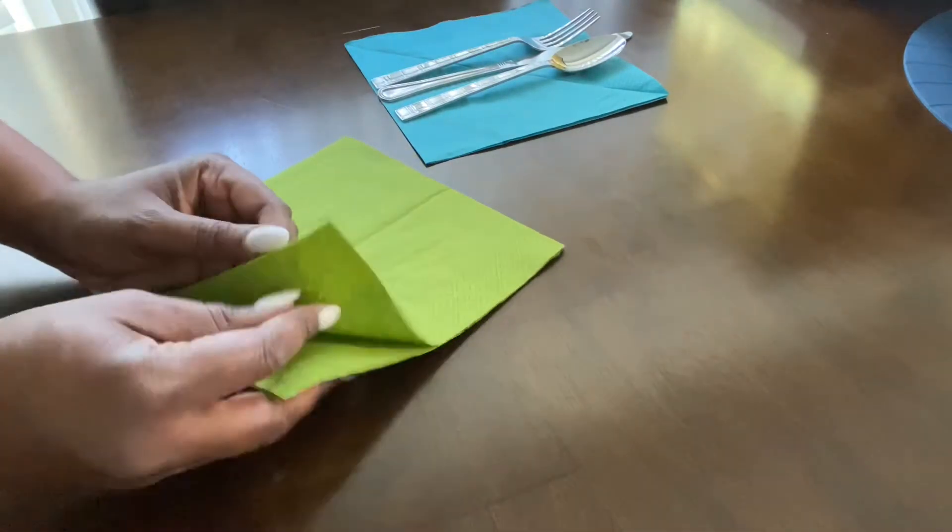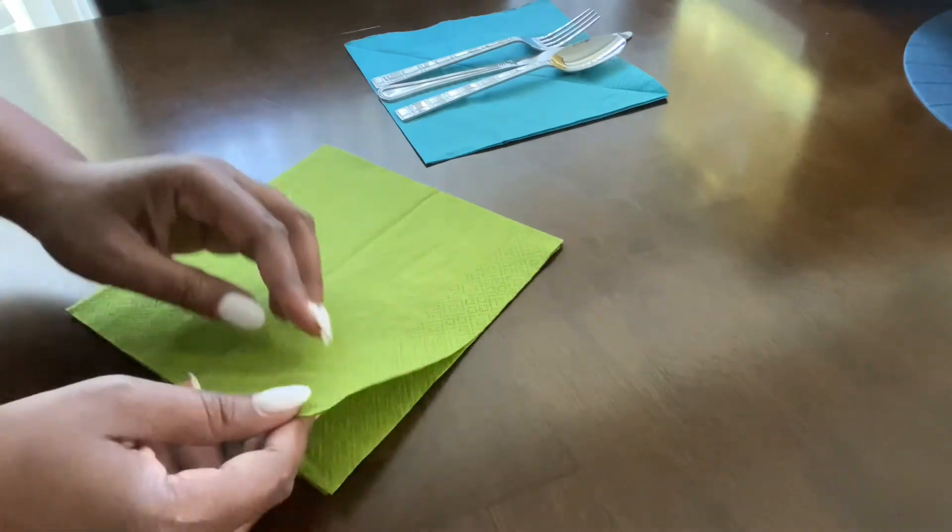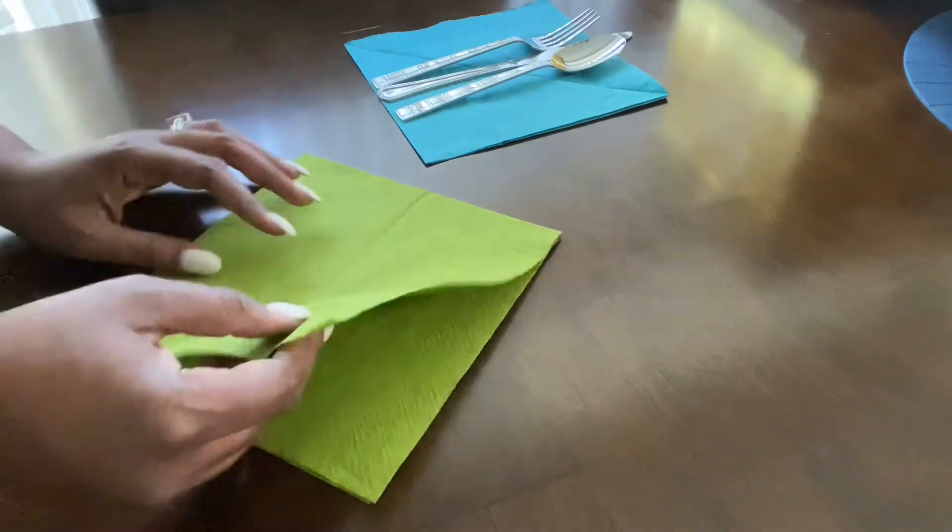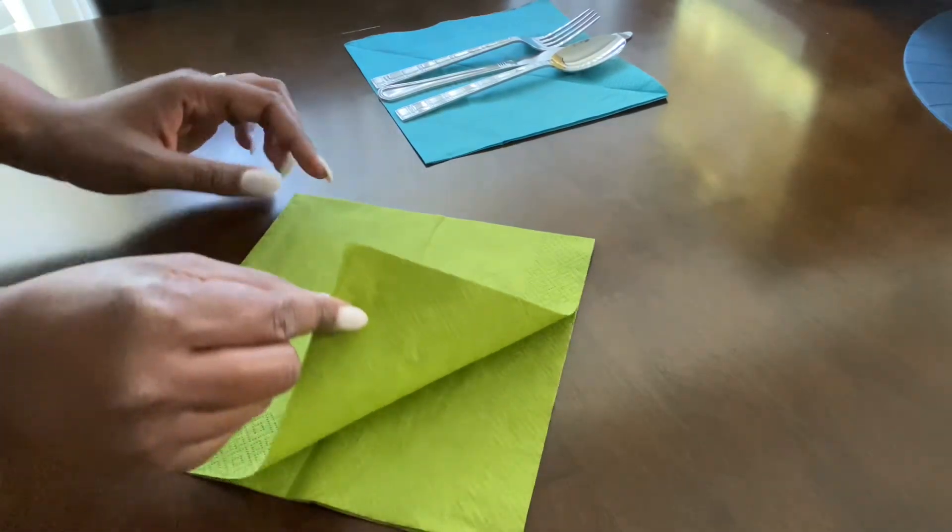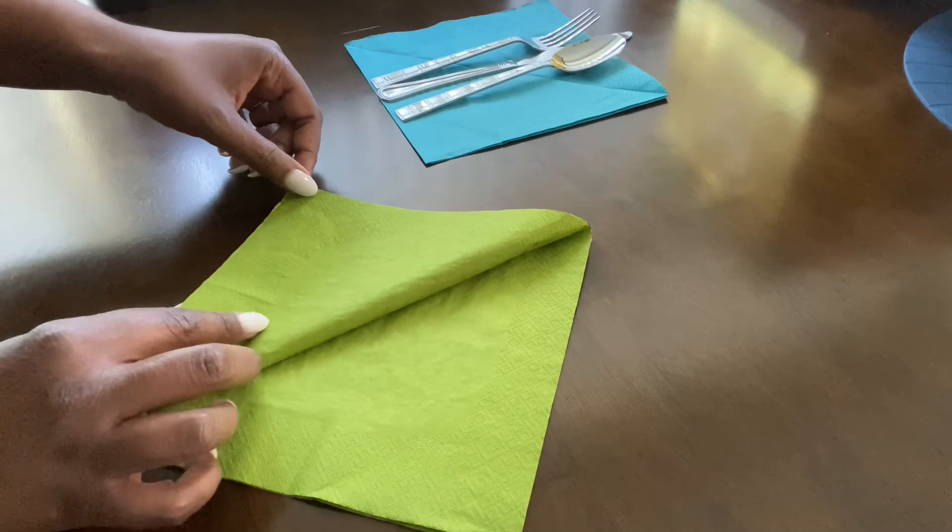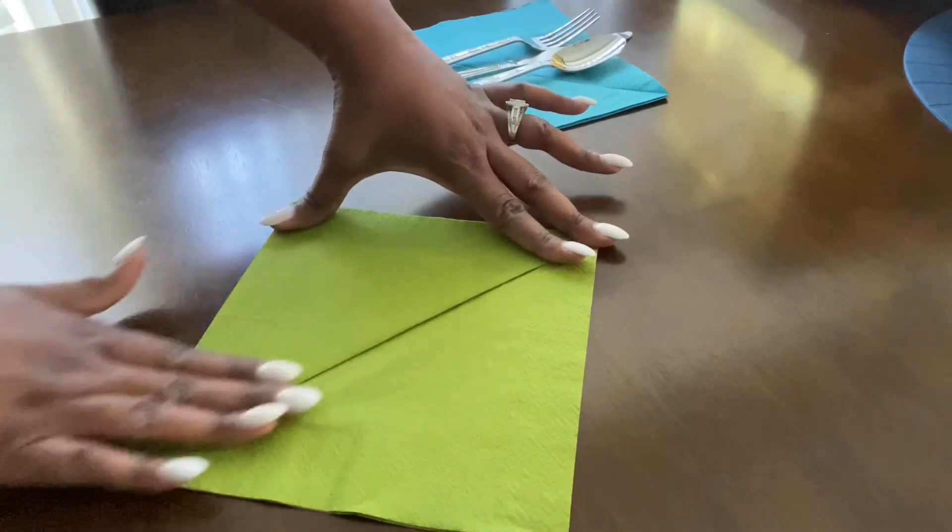What you want to do is look for the side that has the layers. So this is the layered side. I'm going to take the top layer like this - the rest of the layers are right here - and we're going to pull that all the way across to the opposite corner like that, and we're just going to crease it down the middle like this.